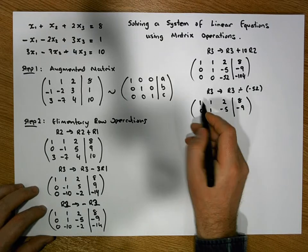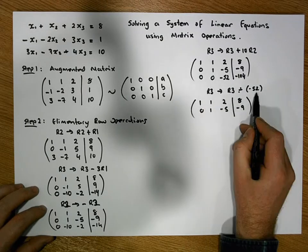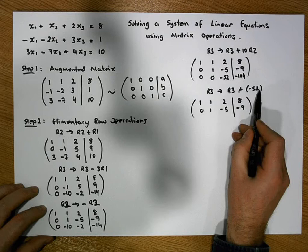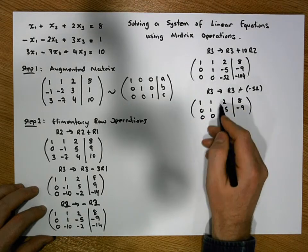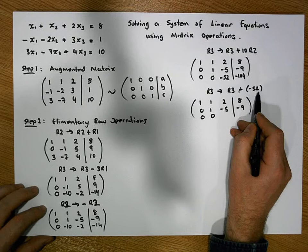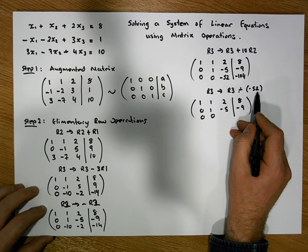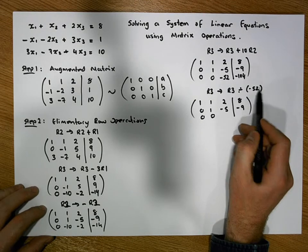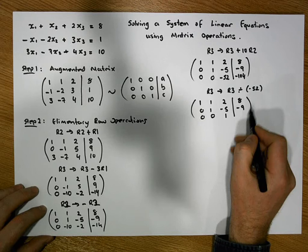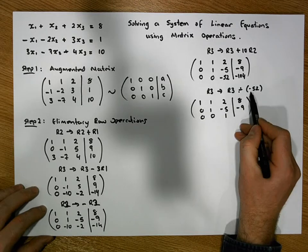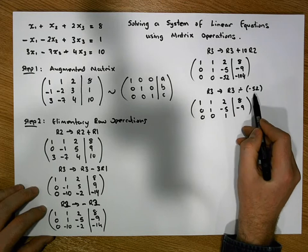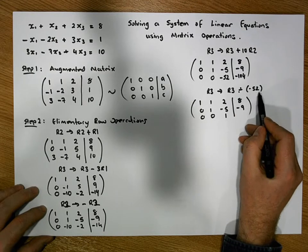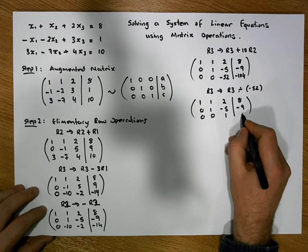When I divide row 3 by minus 52, we have 0 divided by minus 52 is 0, 0 divided by minus 52 is 0, minus 52 divided by minus 52, that's a negative into a negative is a positive, and 52 divided by 52 gives us 1. And finally we have minus 104 divided by minus 52 is a negative into a negative is a positive, 104 divided by 52 gives us a positive 2.